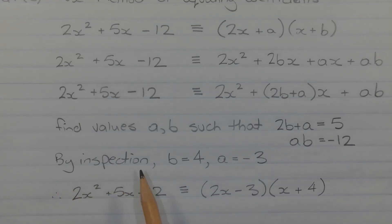Now by inspection, b equals 4 and a equals negative 3. So if we want to test these values with these two equations, 4 times negative 3 gives us negative 12, and 2 times 4 is 8 minus 3 gives us 5.